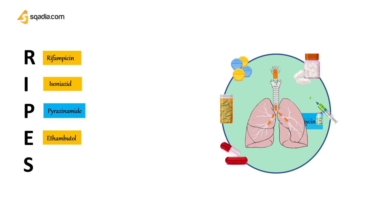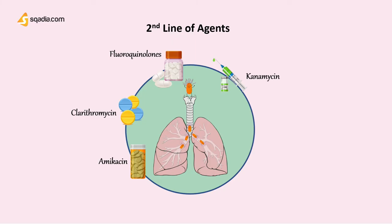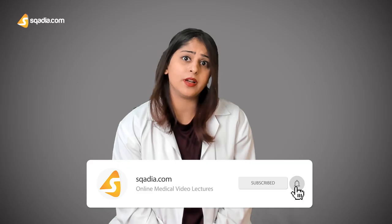As resistant strains have emerged, we need to use second-line agents. These include amikacin, clarithromycin, fluoroquinolones, kanamycin, and capreomycin — all antibiotics, some injectable. Due to non-compliant behavior of patients, multiple drug-resistant strains have emerged. This resistance can be due to interference with mycolic acid or an enzyme called catalase-peroxidase.